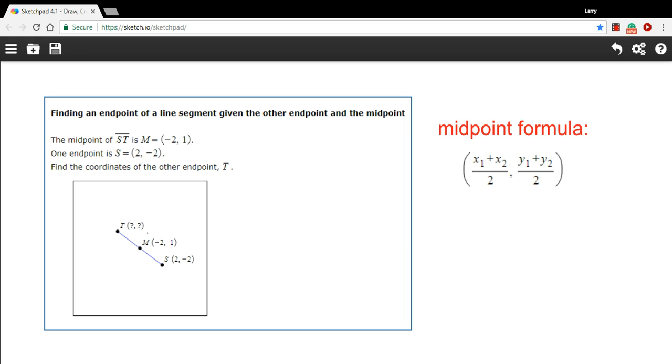Before, we've used the midpoint formula to find a midpoint, the coordinates for the midpoint, when we have the endpoint. But what do we do now when we have the midpoint, but we don't have one of the endpoints? Well, we're still going to use that midpoint formula just in a slightly different way.